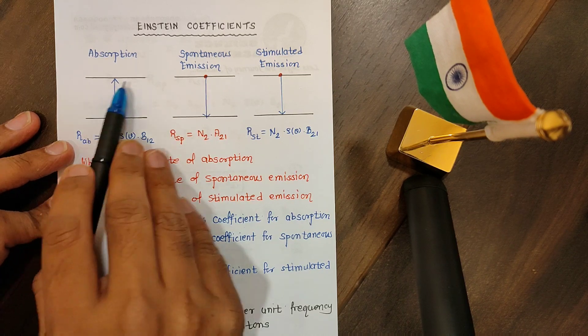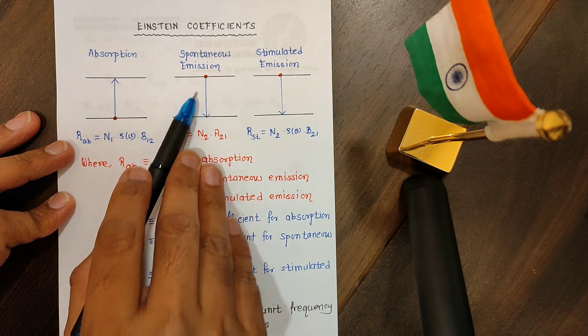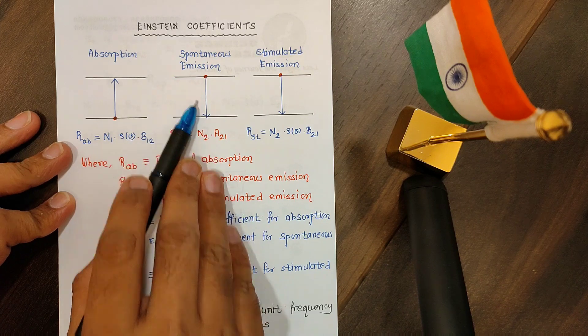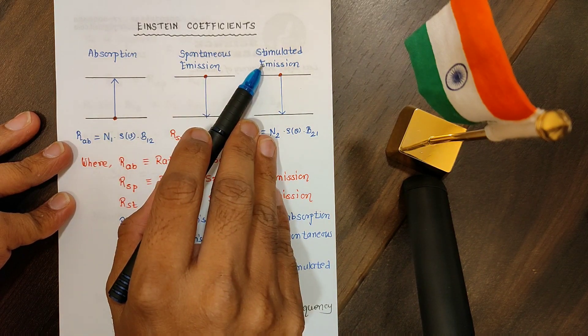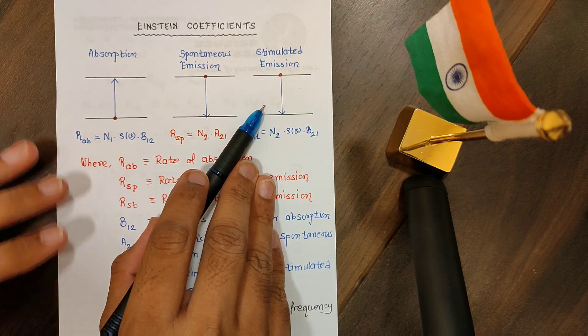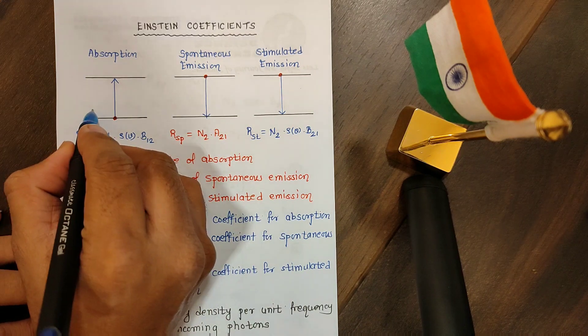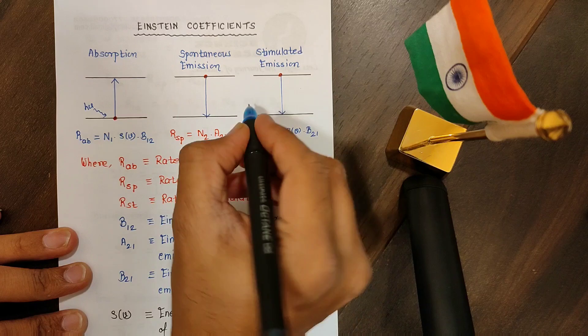But in the emission process they will jump from high energy level to low energy level. In spontaneous, the emission will take place by their own, and in stimulated we need to send some external photon. For the first and the third process we require some external photon whose energy is exactly equal to the difference between these two levels.